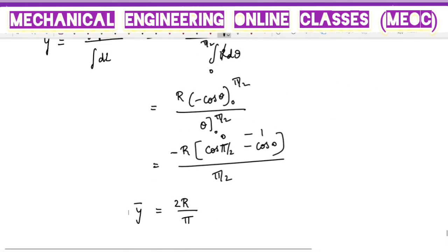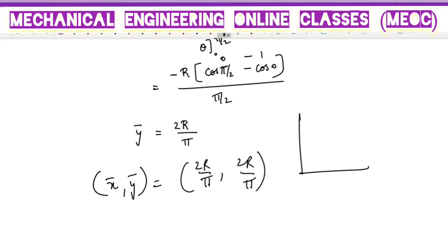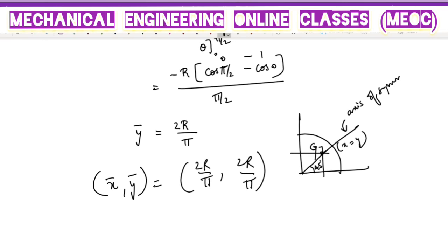If you observe, we have got X̄ and Ȳ as the same: X̄ = Ȳ = 2R/π. This is a quarter circle, so the centroid is located at (2R/π, 2R/π). Since X = Y, the centroid lies on the line at 45° from the X axis, which is the axis of symmetry of the quarter circle. The axis of symmetry cuts the arc exactly at its midpoint, passing through its center. This also serves as proof that the centroid always lies on the axis of symmetry. This is the solution to the given question.